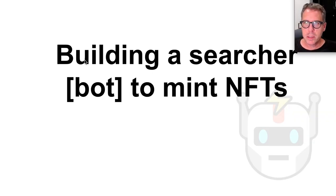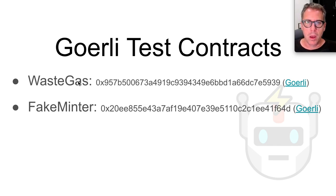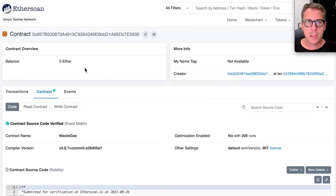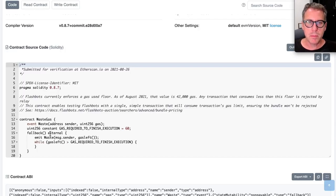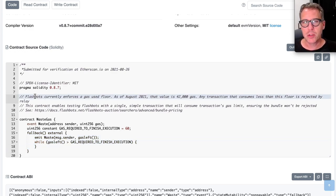Now that we've covered what Flashbots is and why you would use Flashbots to mint NFTs, let's jump into building a TypeScript-based bot that will mint NFTs using Flashbots. We are going to be using the Gorli Ethereum test network. I have two contracts here that I have previously deployed. One of them is called Waste Gas, and we're going to be using this one first as a demonstration to make sure that we have the Flashbots library working and can submit real transactions to the network. This Waste Gas is a very simple contract that simply receives any transaction sent to it and uses all of the gas available.